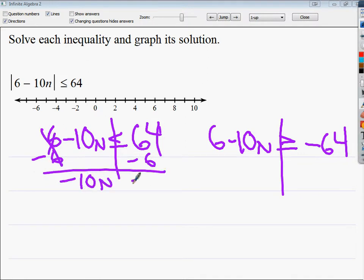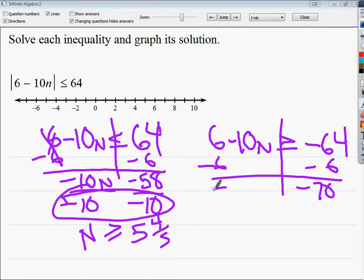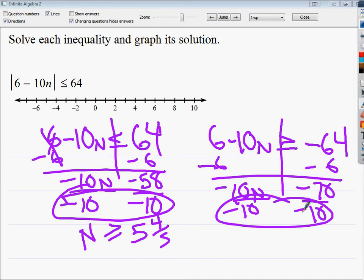So I'm going to divide by negative 10, and here's the deal. I'm dividing by negative 10, which means I need to flip the inequality over. If you divide by negative in the last step, this needs to flip. n is greater than or equal to, I think it ends up being 5 and 4 fifths, something like that.